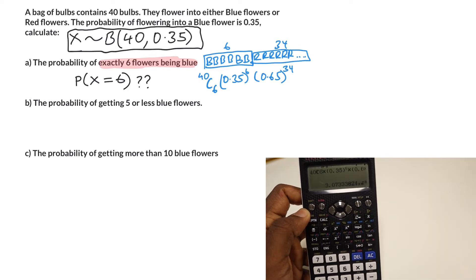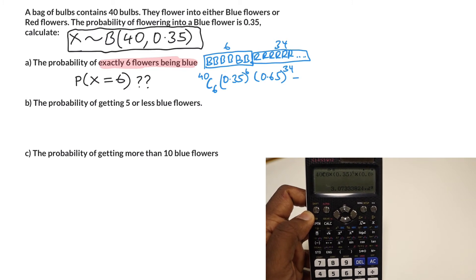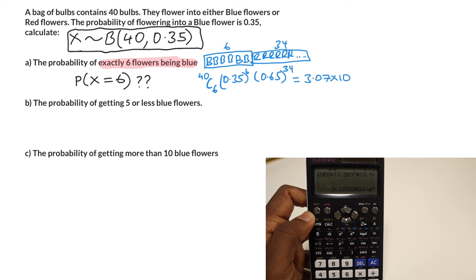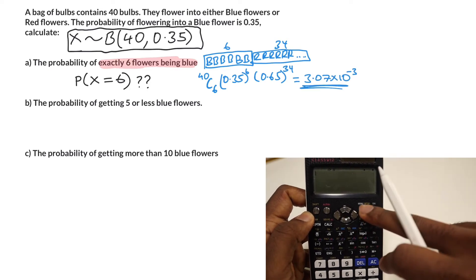We're looking for quite a small number there. That's going to be 3.07 times 10 to the minus 3, and there it is. That's one way of doing it in your calculator.